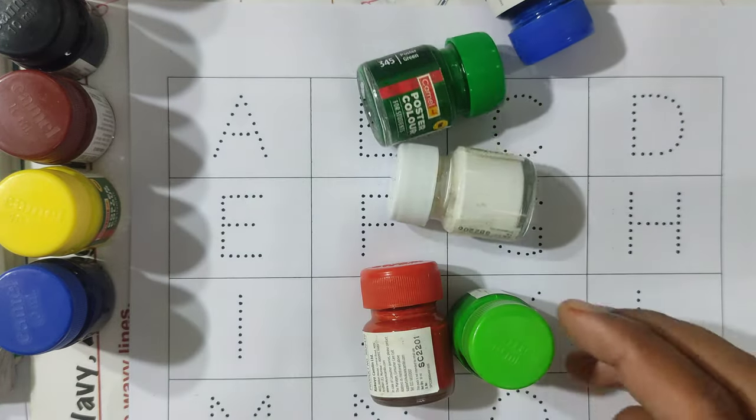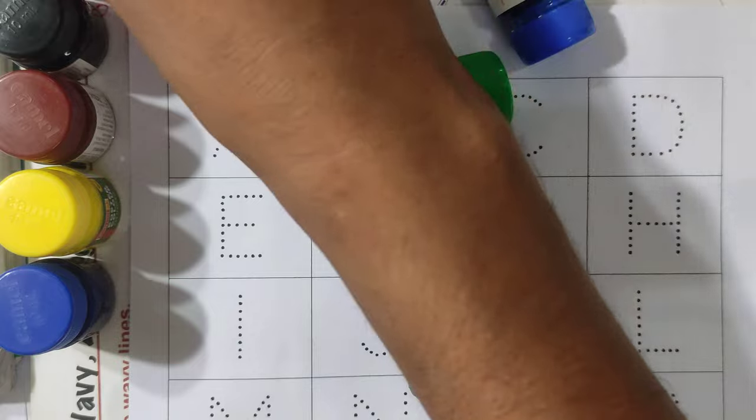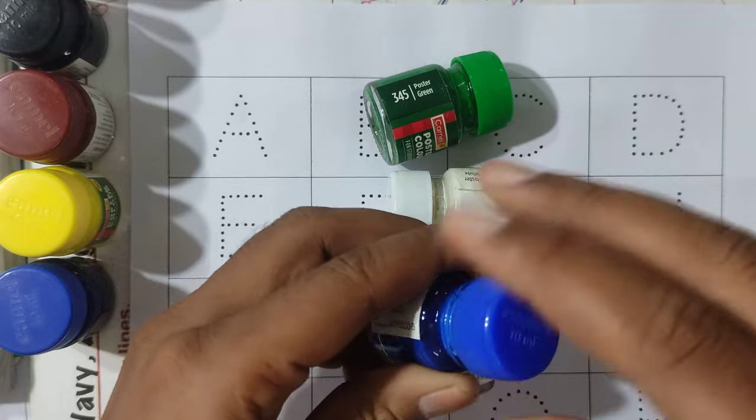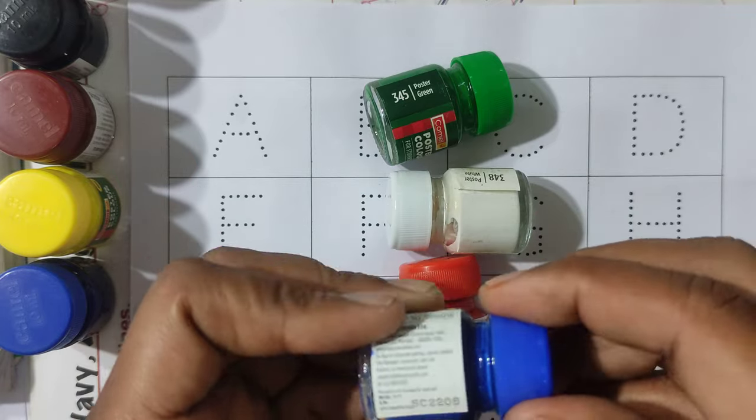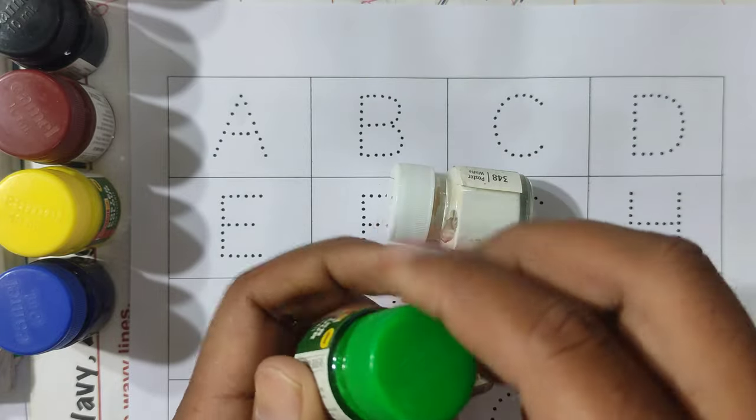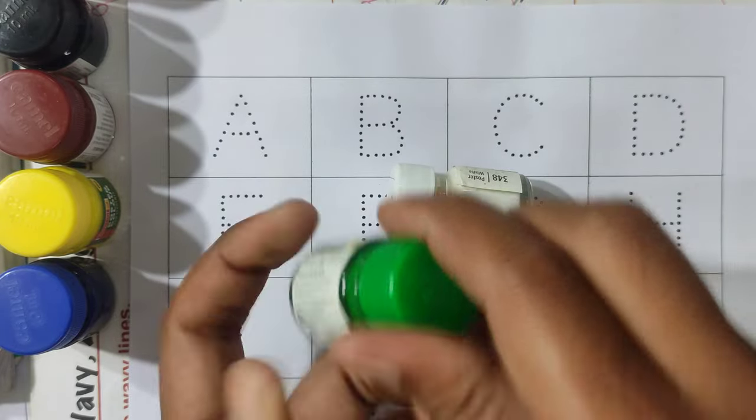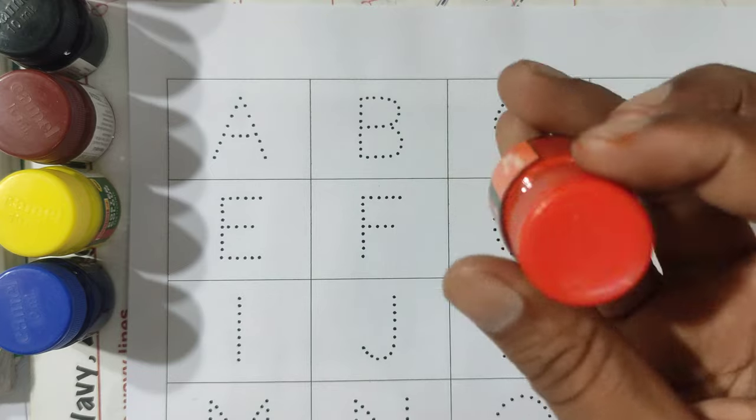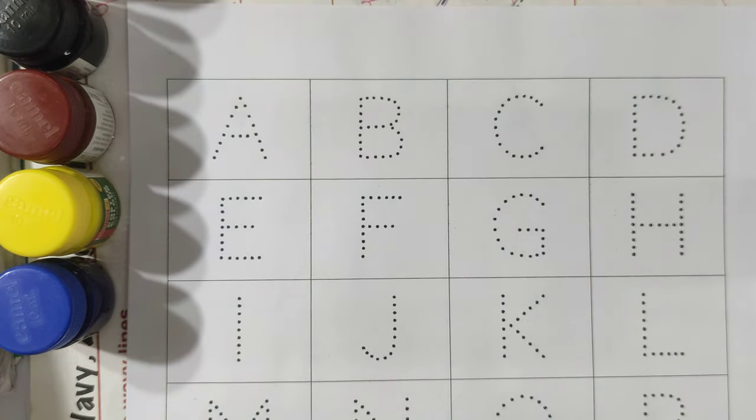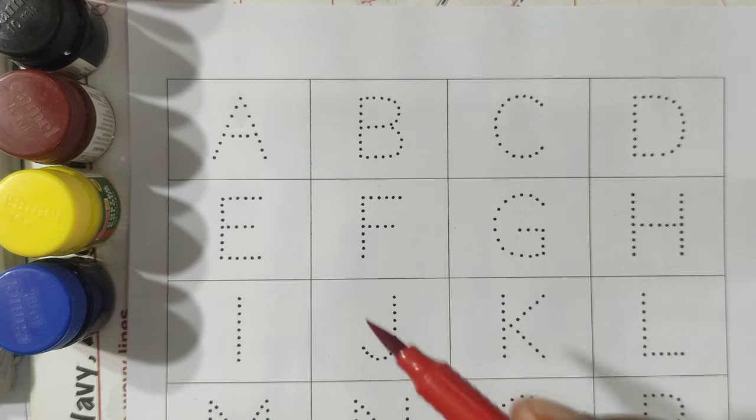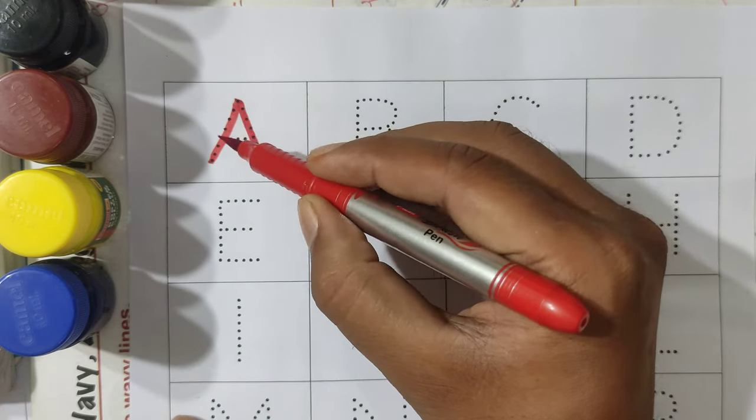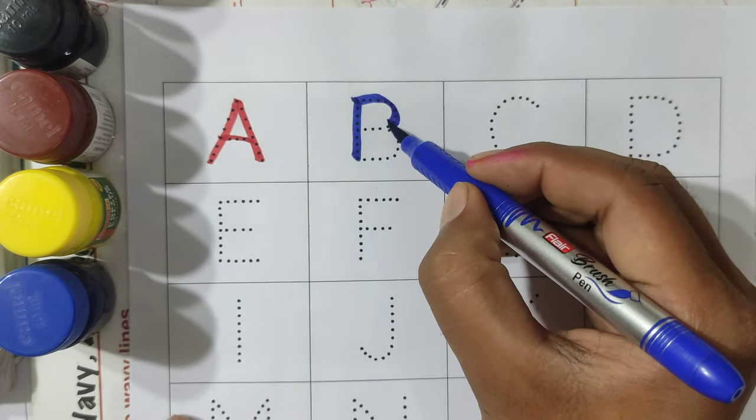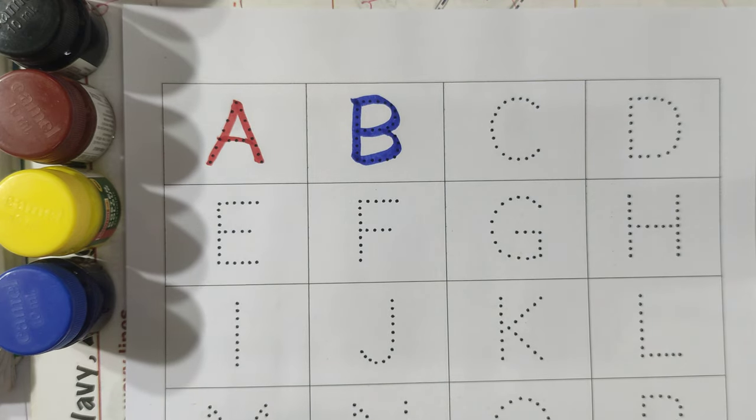Yay! Colors: light green color, blue color, light blue color, green color, white color, red color, blinking. A, A, A for Apple. A for Apple. B, B for Ball. B for Ball.